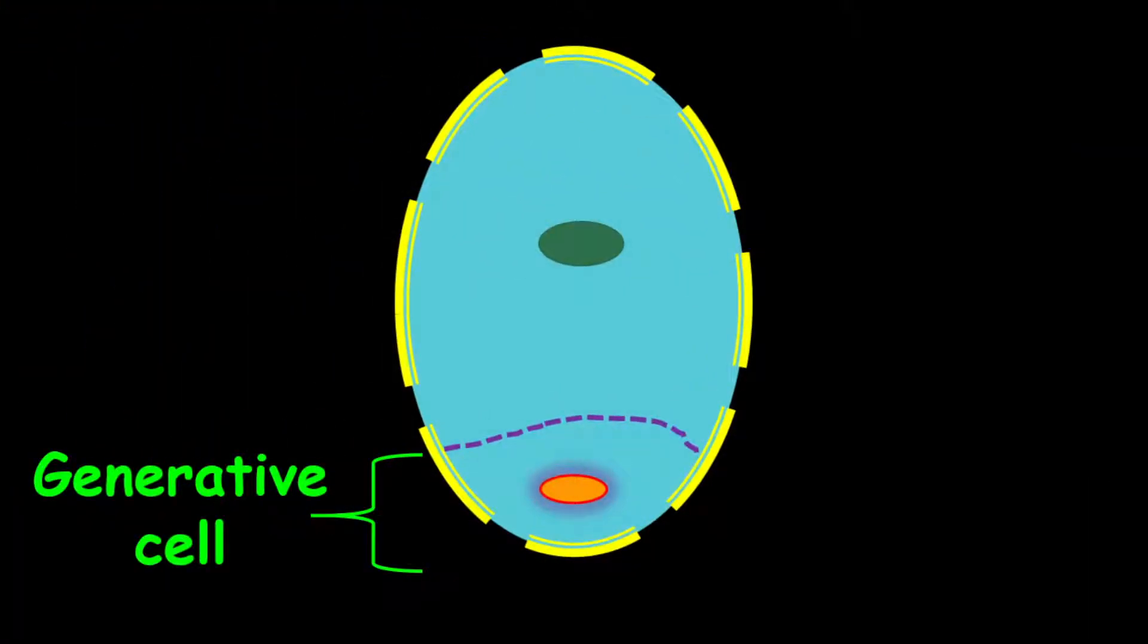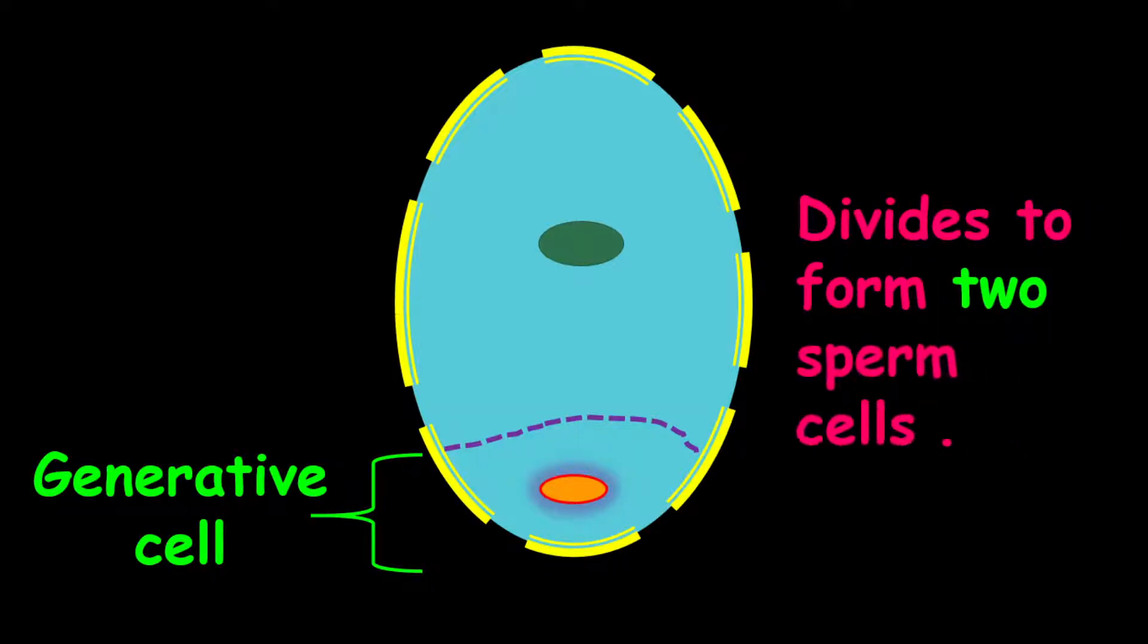And now for the generative cell. The generative cell is important to produce the two sperm cells. So the nucleus will divide to form two sperm cells.